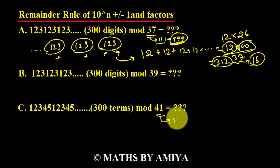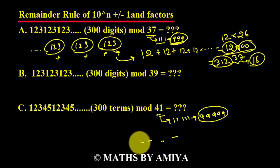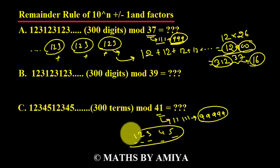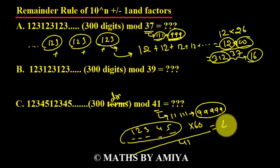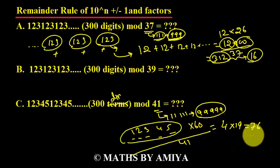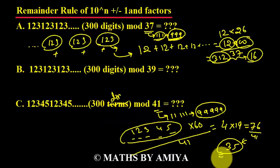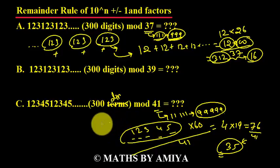Similarly for 41: 41 is a factor of 99999 (5 ones), which is a factor of 99999 (5 nines). The rule for 99999 is to make a bundle of 5 digits from the right-hand side and add all bundles. The 5 digits are 1, 2, 3, 4, 5, and there are 60 such bundles. So the answer is (12345 mod 41) times (60 mod 41). 12345 divided by 41 gives remainder 4. 60 divided by 41 gives remainder 19. 4 times 19 equals 76. Since 76 is more than 41, we divide 76 by 41 and the final remainder is 35.